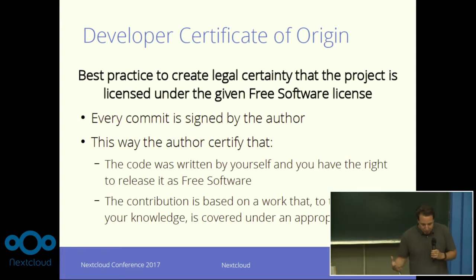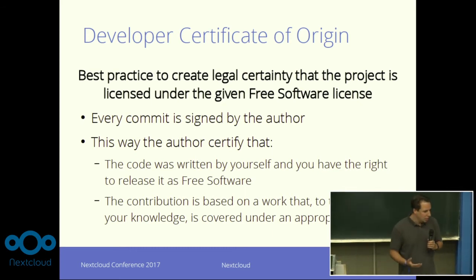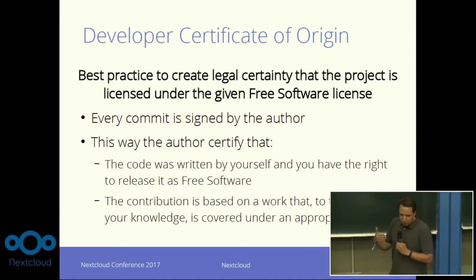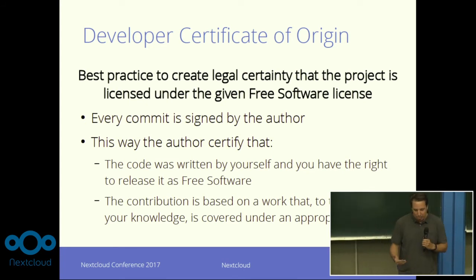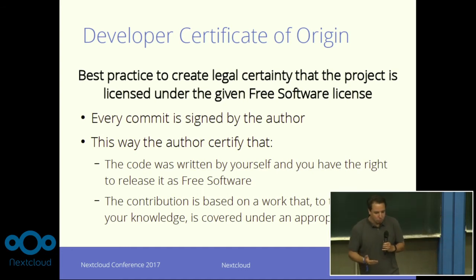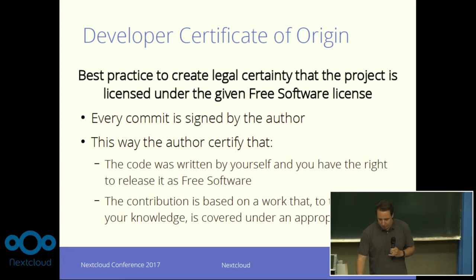To still create some certainty about the legal situation of the project, especially for customers, we introduced the Developer Certificate of Origin. That's something done by most of the large free software projects these days, like the Linux kernel, Eclipse, Docker, and many more. Basically, if someone commits code by signing their commit, they're saying: I wrote this code myself and I can contribute it to the project under the AGPL — under the project license — or if I'm employed, my employer allowed me to do it, or if I took the code from somewhere else, I checked as thoroughly as possible that I'm allowed to give the code under the license. So that's why it's really important to sign your commits, even if developers often find it a little annoying. It really adds legal certainty to our project.